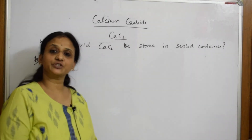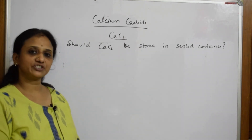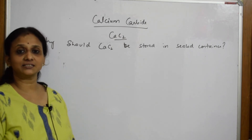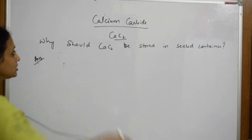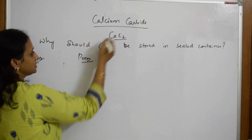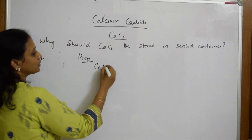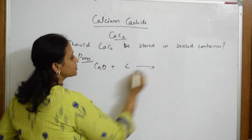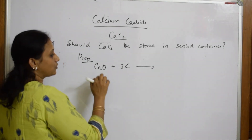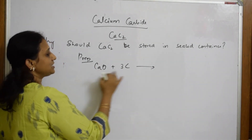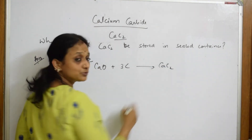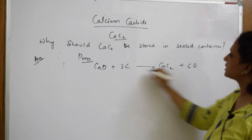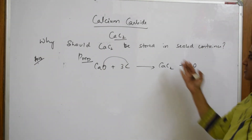Now let's look at calcium carbide. A common exam question: why should calcium carbide be stored in sealed containers? To answer this, first let's see how calcium carbide is prepared. We take quicklime (CaO) and add coke (carbon). Heating gives: 3C + CaO → CaC₂ + CO. So calcium carbide and carbon monoxide are produced.